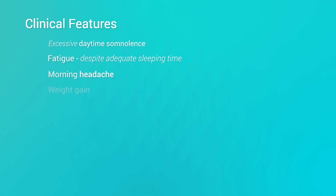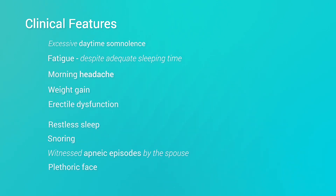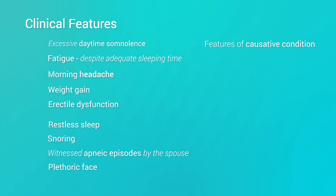These patients may also present with the same signs and symptoms as those with obstructive sleep apnea. In addition, they have the features of the condition that has caused their central sleep apnea or hypoventilation. Patients can also present with acute type 2 respiratory failure or with features of cor pulmonale.